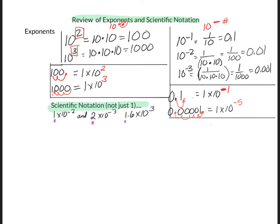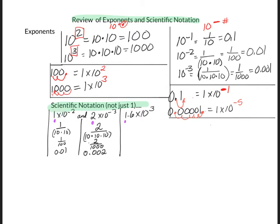Now let's see how those numbers would be written in non-scientific notation. We'll start with 1 times 10 to the negative 2. As you know, that is the same as 1 divided by 10 times 10, which was 0.01. For 2 times 10 to the negative 3, that's going to be 2 divided by 10 times 10 times 10, so that would be 0.002. What about 1.6 times 10 to the 3rd? That is 1.6 times 10 times 10 times 10, or 1.6 times 1,000, which of course is 1,600.